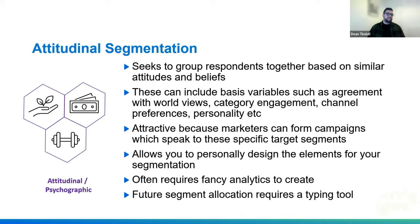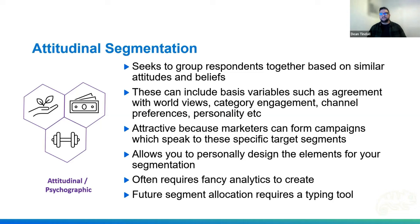The third flavor is attitudinal segmentation, where we group people based on similar attitudes and beliefs — variables like agreement with worldviews, category engagement, or channel preferences. Markets can form campaigns speaking to these specific segments. However, you do need fancy analytics and a clustering algorithm, and future segment allocation requires additional modeling. Problems arise because data is largely collected on Likert scales, which are subject to scale use bias and high levels of correlation, making it hard for algorithms to identify key differences. Bad clustering often leads to three segments where one scores low on everything, one medium, and one high — which unfortunately happens more often than you'd like.